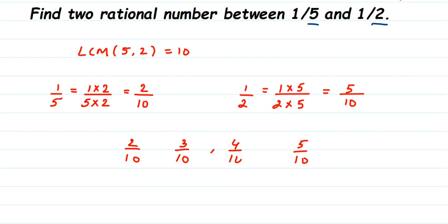The question is asking us to find two rational numbers. We cannot include 2/10 and 5/10. Excluding these, we got two rational numbers between them: 3/10 and 4/10. That will be the answer.